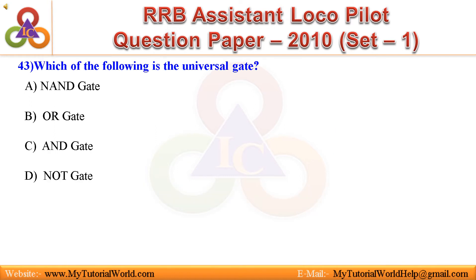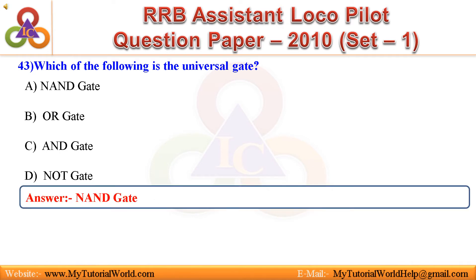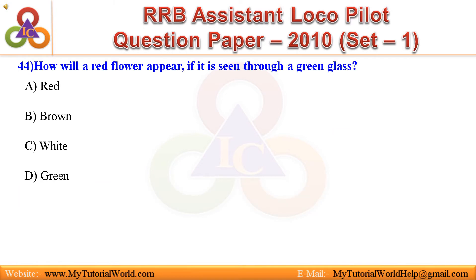Question 43: Which of the following is the universal gate? A. NAND gate, B. OR gate, C. AND gate, D. NOT gate. Answer is NAND gate.